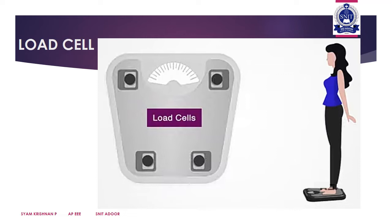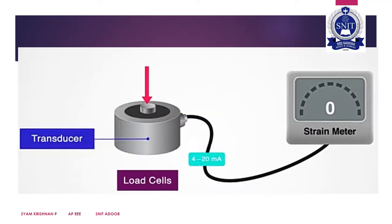A load cell is a transducer — it converts force into an equivalent electrical signal, and thereby we are able to measure the equivalent pressure or weight. The types of load cells include: strain gauge type, pneumatic type, hydraulic type, and capacitor type.